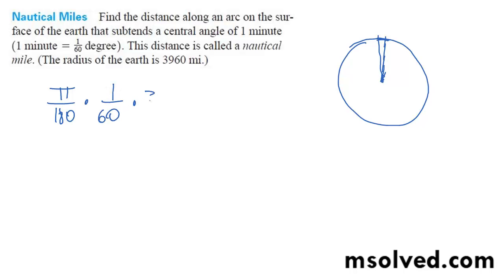And then you multiply by how many miles that is, so basically you get 3960π divided by 180 times 60.